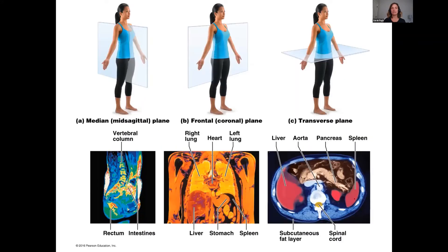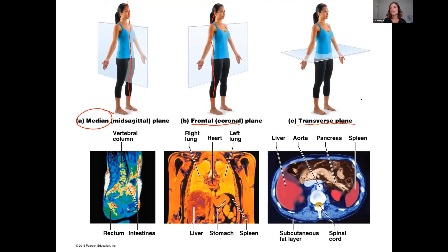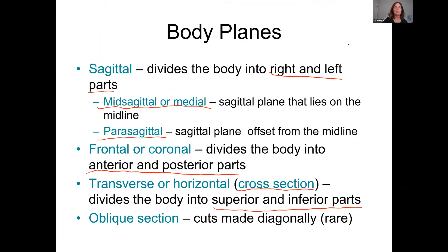Here are images of these cuts. The mid-sagittal cuts the body into right and left halves. The frontal or coronal cut divides it into a front half and a back half. The cross-section or transverse cuts it into an upper and lower half. At the bottom you can see MRI images showing how the body is cut into different planes for viewing. There are also oblique cuts — these are diagonal cuts that are pretty rare, more often used in autopsies. A lot of times when we discuss these planes, we're not actually cutting someone — it's how we're viewing the body using MRI.